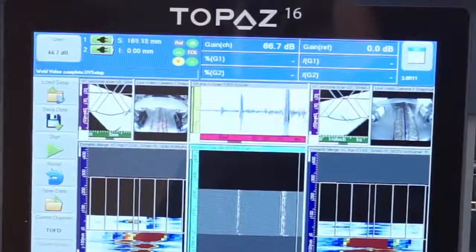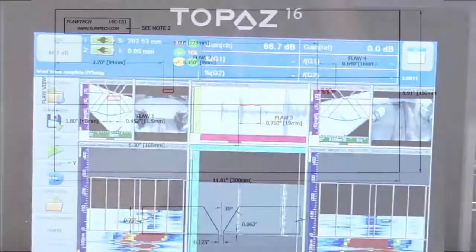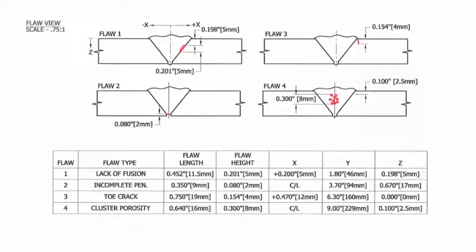The video images can be displayed on the TOPAZ screen during data acquisition and can be saved with the ultrasonic data to provide additional information during data analysis. The weld considered in this demo is a carbon steel weld plate with a nominal wall thickness of 19 millimeters or 3 quarters of an inch. It has a commonly used V-type bevel and contains typical welding defects: lack of fusion, incomplete penetration, a toe crack and a cluster of porosity.